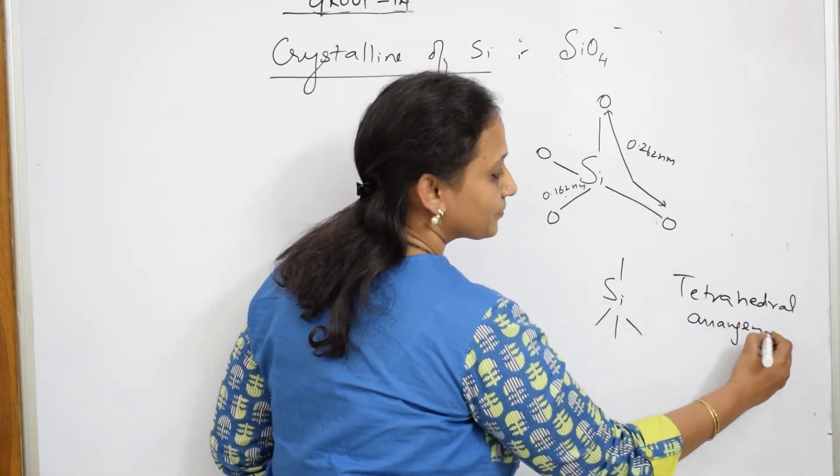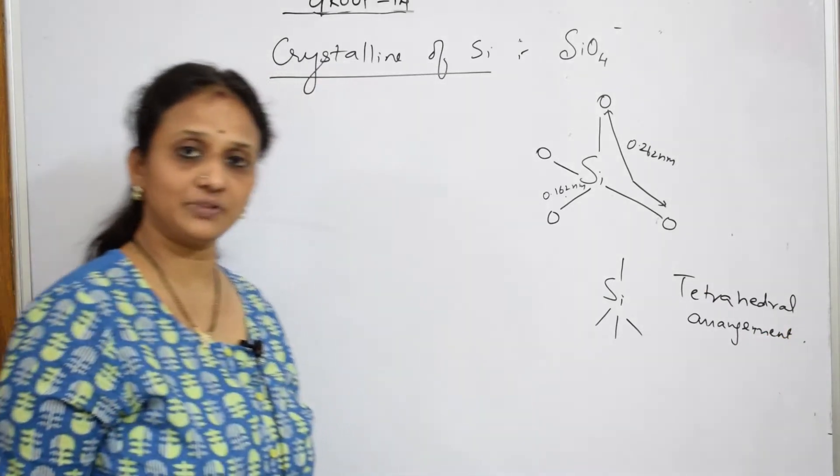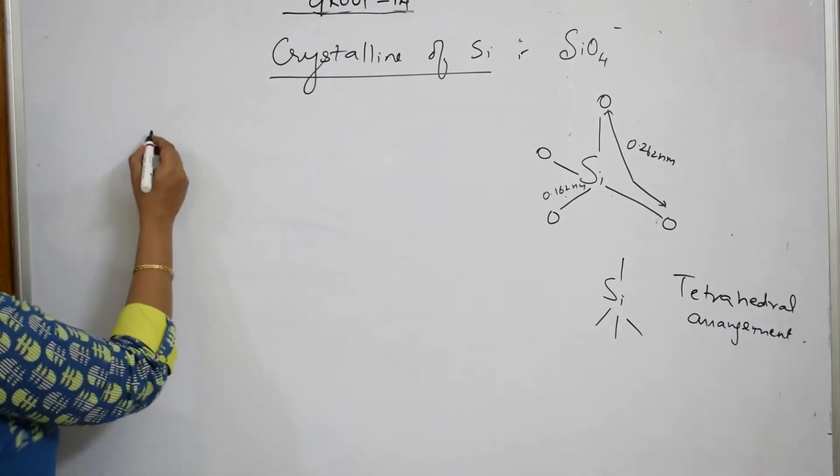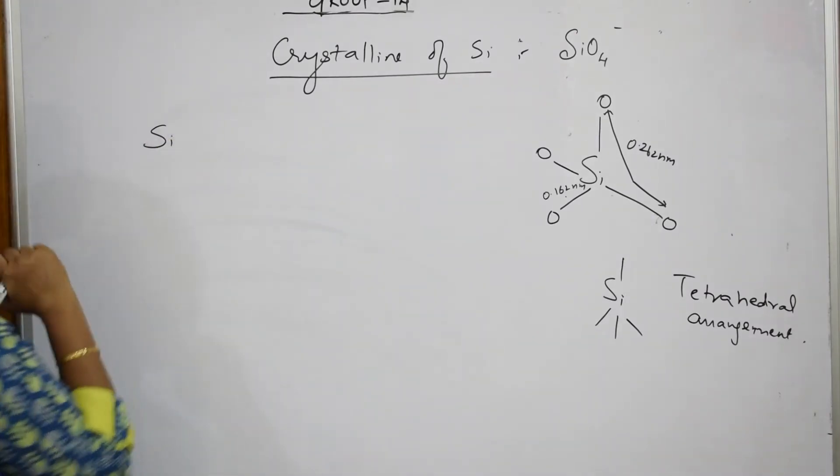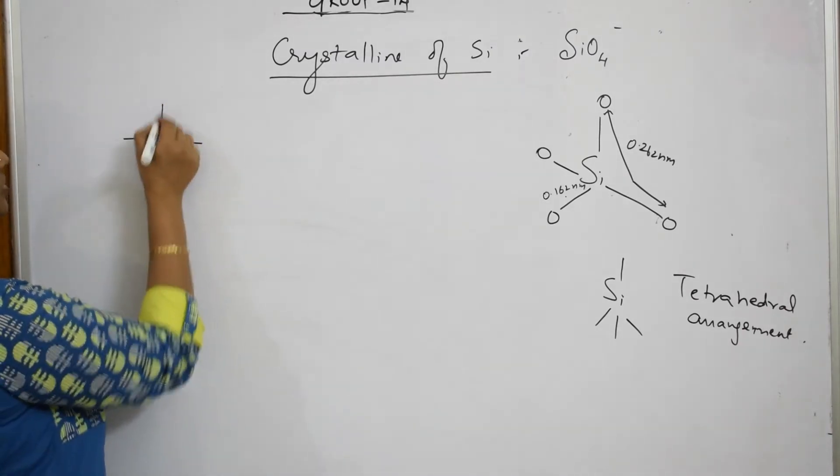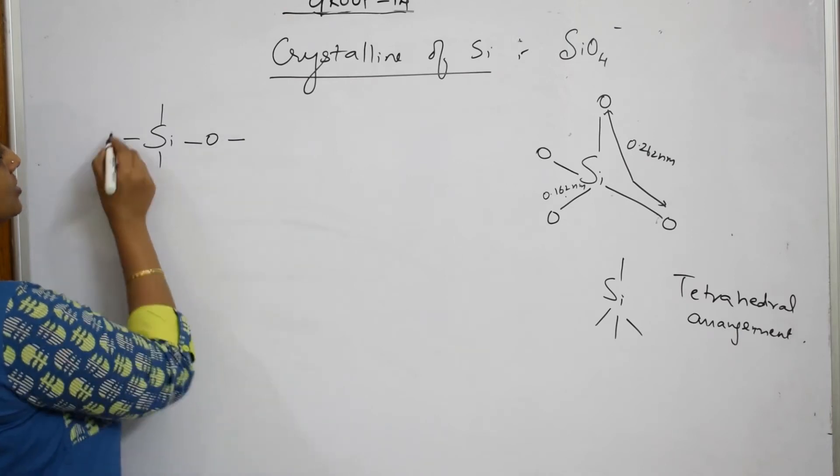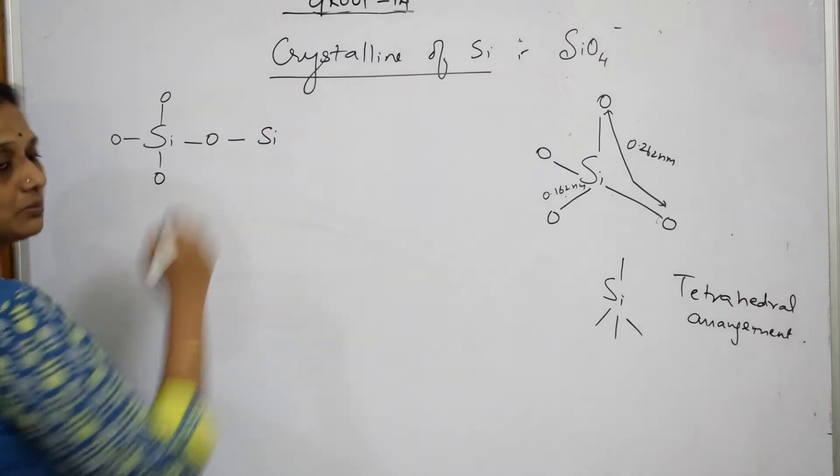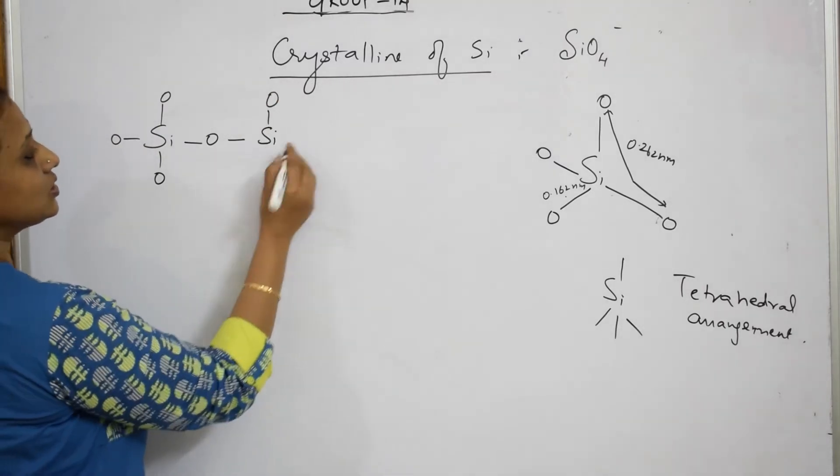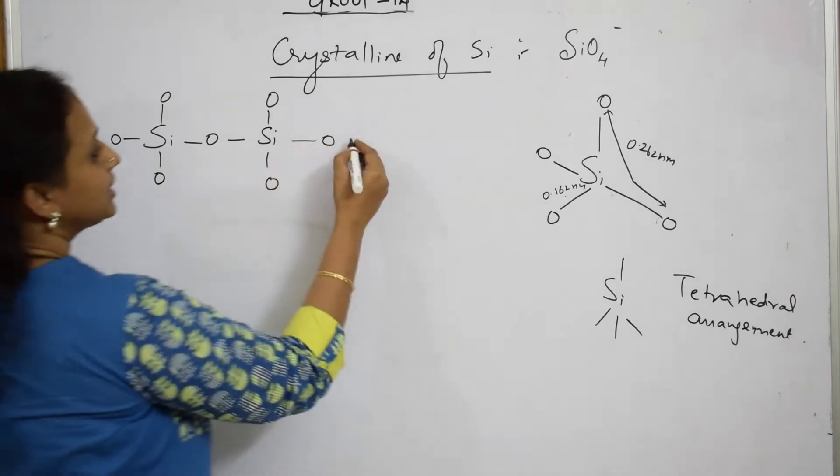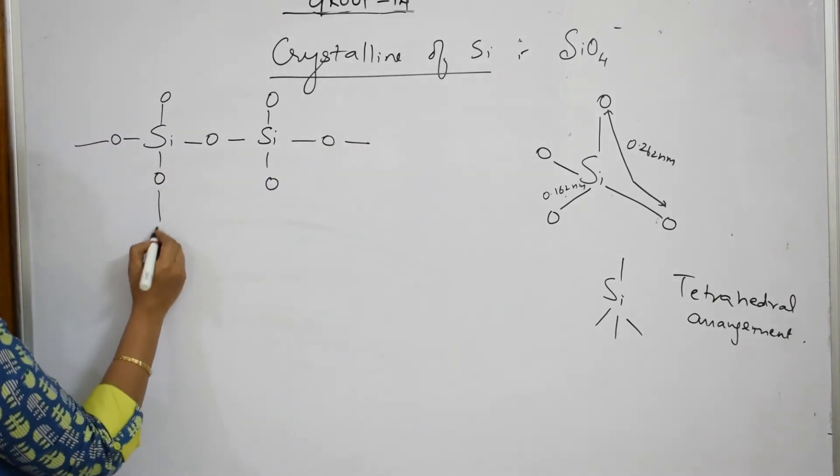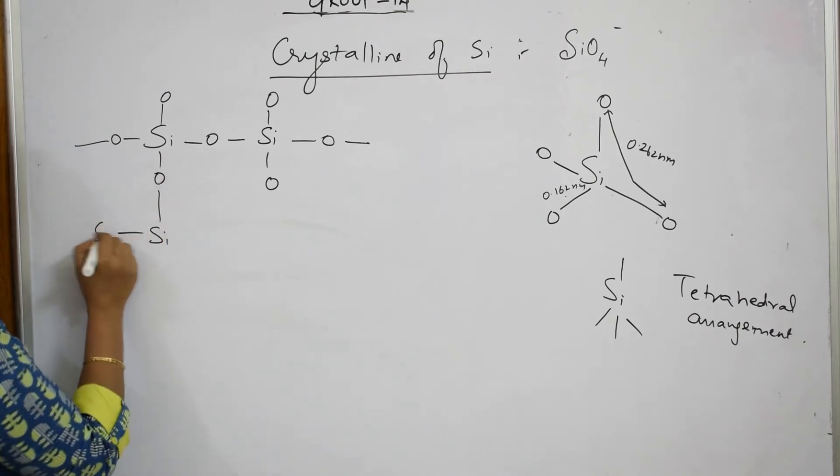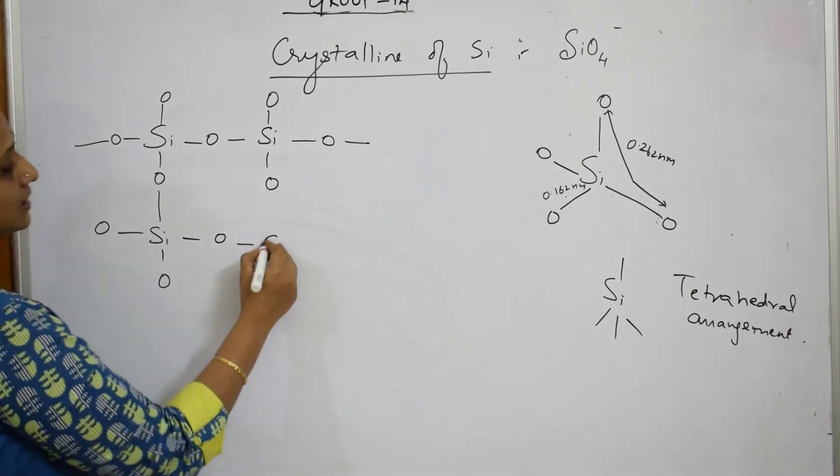Now this tetrahedral arrangement, it's a three-dimensional structure. When I'm showing it in a single plane, how does this look? You have your silicon atom, there are four together, one, two, three, and four, one oxygen atom. This is oxygen, this is oxygen, this is also oxygen. It is shared by one more silica. This silica also has oxygen atoms, four. This is shared, this is shared. Now this oxygen is shared by one more silica again.